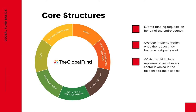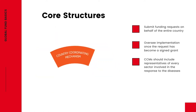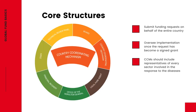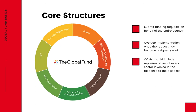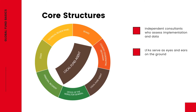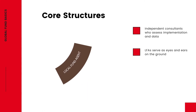Then there are the Country Coordinating Mechanisms, or CCMs. Each implementing country establishes a national committee — a Country Coordinating Mechanism — to submit funding requests on behalf of the entire country and to oversee implementation once the request has become a signed grant. CCMs should include representatives of every sector involved in the response to the diseases. Then there are the Local Fund Agents, or LFAs — independent consultants who assess implementation and data. As the Global Fund does not have offices in country, LFAs serve as the eyes and ears of the Global Fund on the ground.